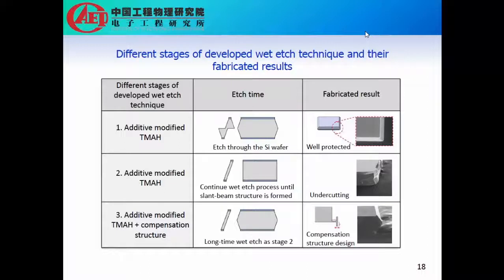During fabrication, one of the main challenges is the silicon wet etching. Because we want to have a symmetric structure, we need to etch the proof mass from both sides. In this case, the slanted beam will require much longer etch time than the proof mass, so we need to protect the corners of the proof mass during this long over-etch. After several tries, a specific fabrication technique was developed using additive-modified TMAH combined with a compensation structure design.